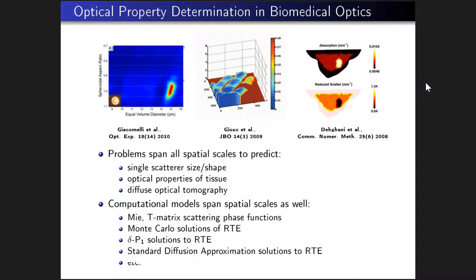This is done on several spatial scales. Giacomelli's group is looking at determining the size and shape of single scatterers. Siobhan Zhu's group is looking at thicker tissues like fingers, determining their optical properties. Even thicker tissues like breasts are analyzed using optical tomography to determine the distribution of absorption and scattering. These problems span all spatial scales, and they're looking at four different constituents of the tissue.